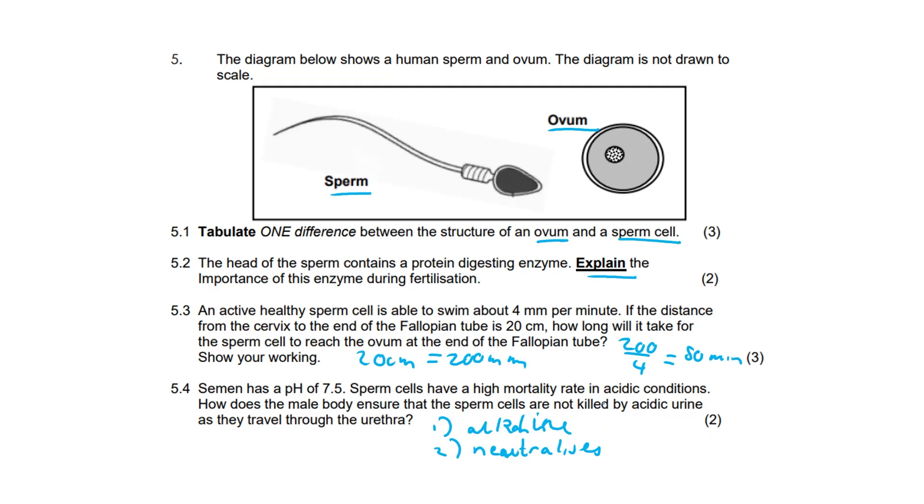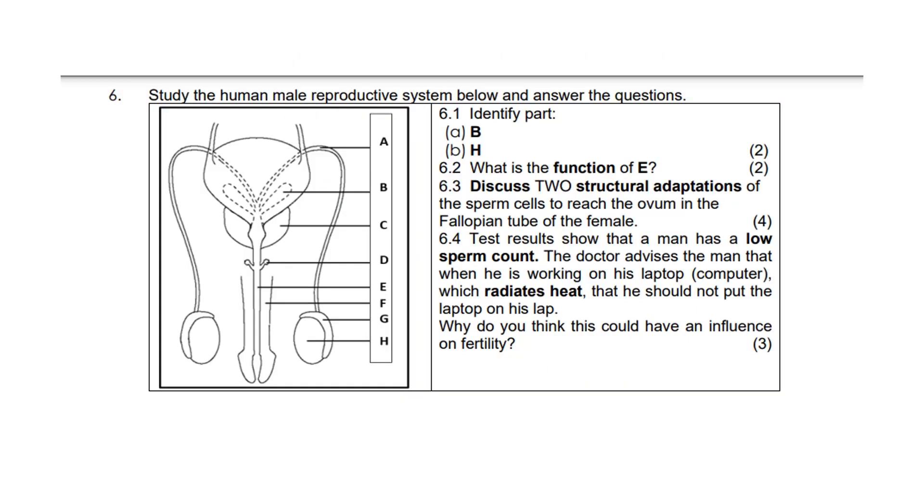Question six. Let's quickly label everything. A is the vas deferens - oh, I love that word, you sound so posh and knowledgeable when you say it. B, the seminal vesicles. C, the prostate gland. D - learn the spelling for this one - it's the bulbourethral gland. You imagine I spelled that wrong, what a terrible bio tutor. E is the urethra, F is the penis, G is the epididymis, and H the testes.